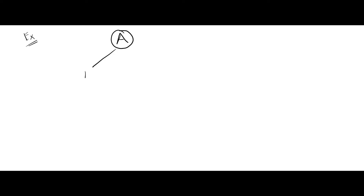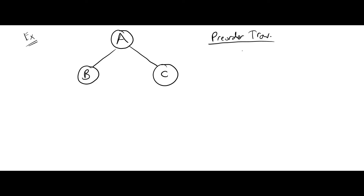Let's solve an example. Here is the example: let's say we have a binary tree. This is node A, this is node B, and this is node C. If I want to find the pre-order traversal, what is the summary of pre-order? First of all, visit the root, then left, then right. What is the root? It is A. So when doing pre-order traversal on this binary tree, root A will be visited first.